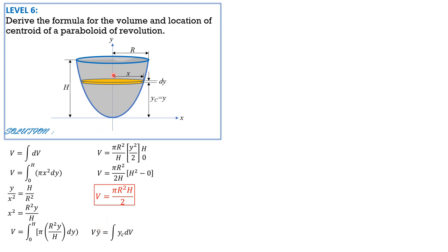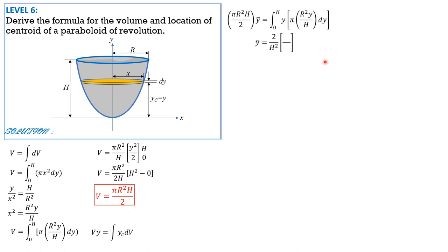In general, we locate the centroid of the paraboloid using Varignon's theorem: volume times ȳ equals the integral of y sub c dV. So π R²h/2 times ȳ equals the integral of y times π R²y/h dy. Since π R² is constant, we evaluate y² dy which is y³/3. So ȳ equals 2/h times h times y³/3 from 0 to h. Substituting, ȳ equals 2/(3h²) times h³, so ȳ or y_G equals two-thirds of h.